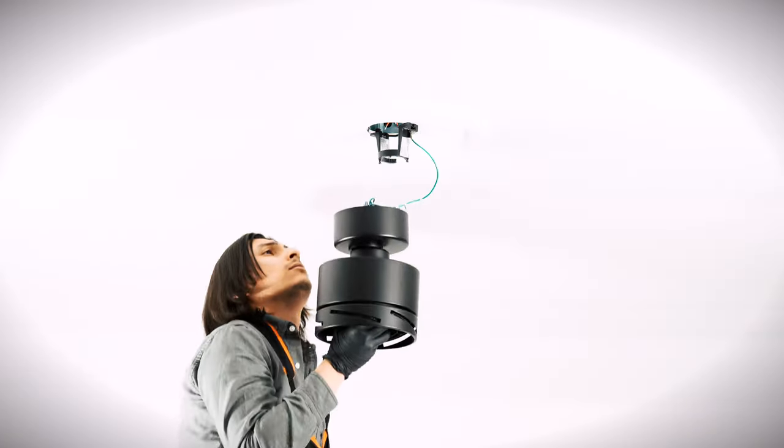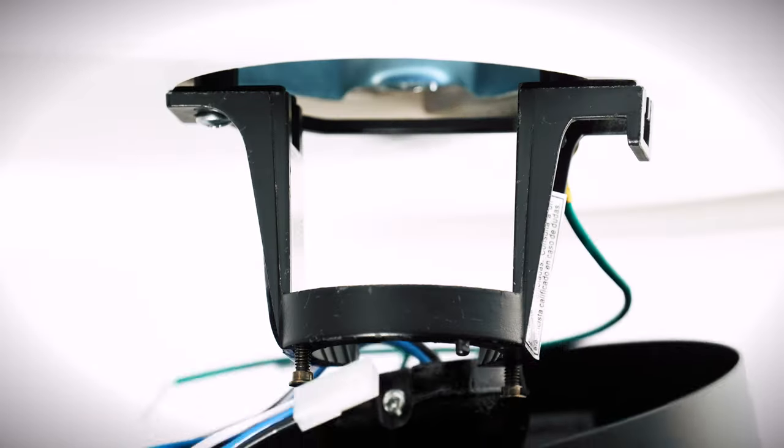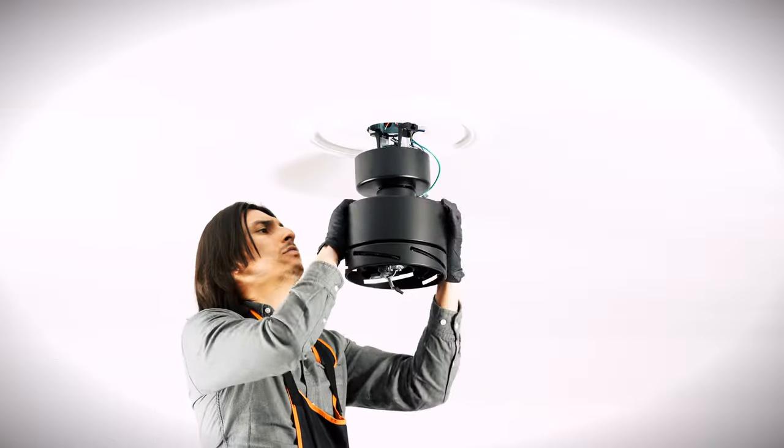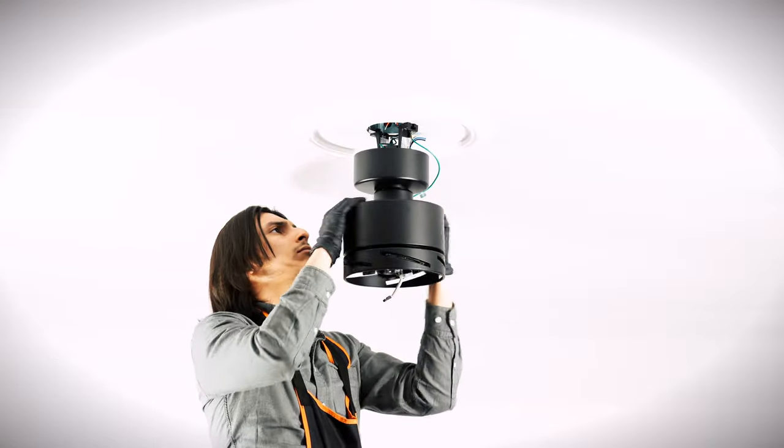Carefully bring the fan motor up to the ceiling and place the ball into the mounting bracket. Turn the fan to align the groove in the ball with the tab on the bracket.